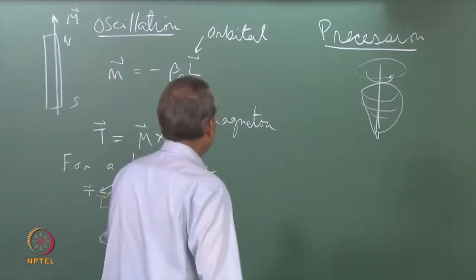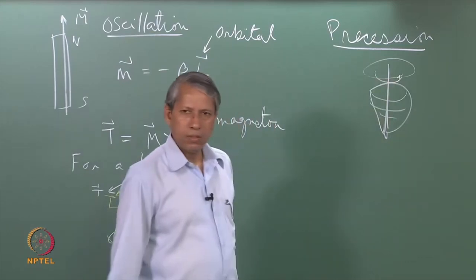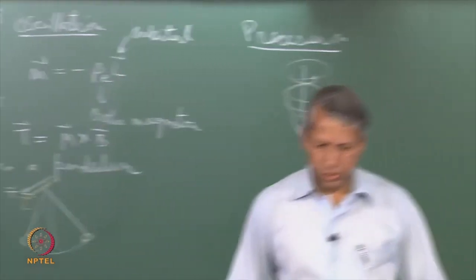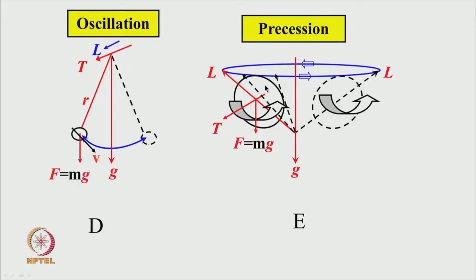This is not the same when a top is spinning around its axis. To understand the difference, let us look at this picture. This spherical ball is a simplified version of a top and it is spinning around the axis given by this vector L, which is also the direction of the angular momentum. Now, the earth's gravitational field acts on it — the force mg tries to bring it down. The direction of the torque is perpendicular to the plane. But the angular momentum is in this direction and the torque is perpendicular to it.